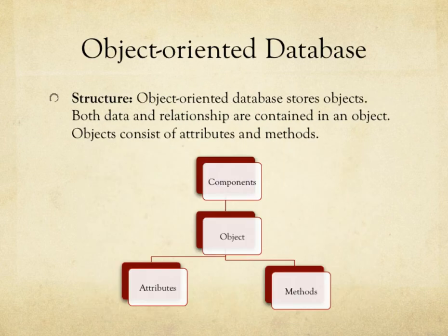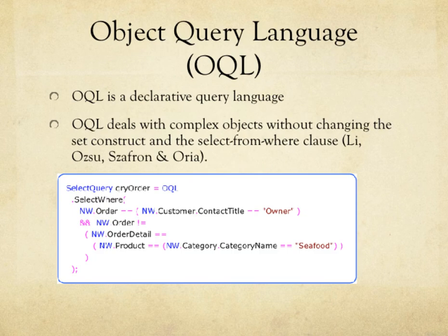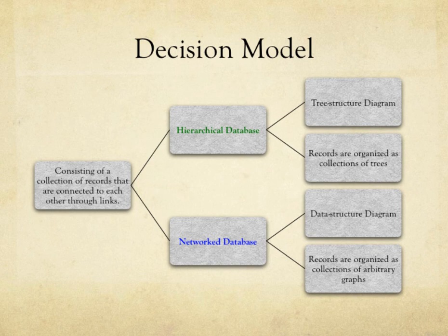The difference between hierarchical and network databases is that records in a hierarchical database are organized as a collection of trees, whereas in a network database they form a collection of graphs.